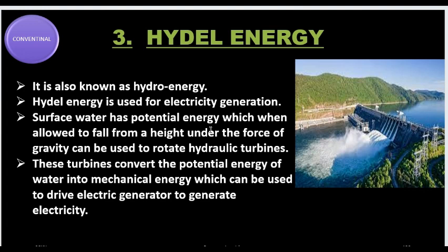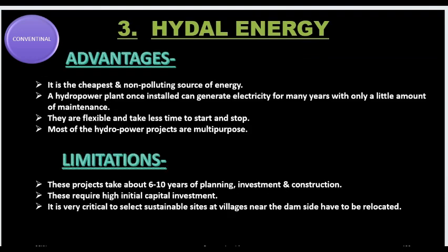The next energy is hydro energy. We call it hydro energy, and this energy is used for electricity generation. What happens is we build dams and store water. When the dam opens, the water moves from a height due to gravity, the turbines rotate, and potential energy is converted into mechanical energy. When the generator moves, electricity is generated. The most important advantage of hydro energy is that it is the cheapest and non-polluting — it doesn't cause pollution to install or use. If a hydropower plant is installed, it will help us for many years with electricity generation, and maintenance cost is very low.